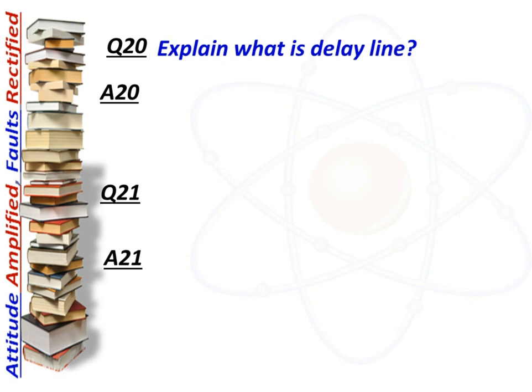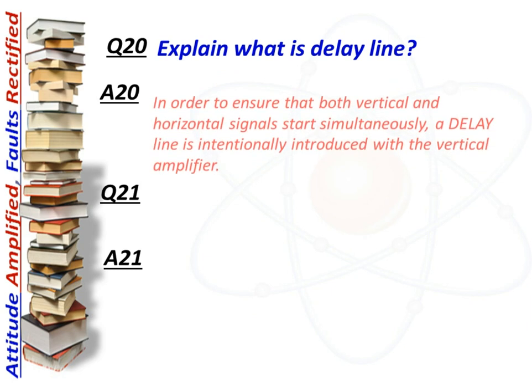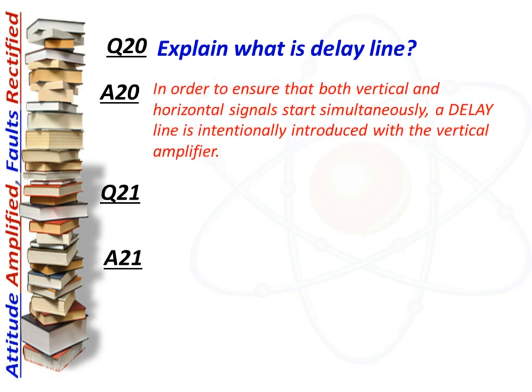Next question: what is a delay line? Answer: In order to ensure that both vertical and horizontal signals start simultaneously, a delay line is intentionally introduced with the vertical amplifier.